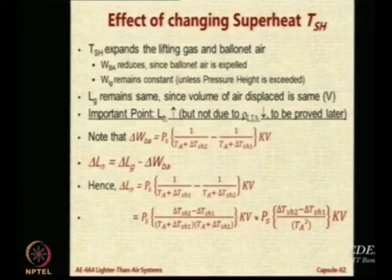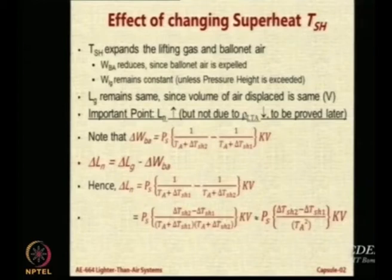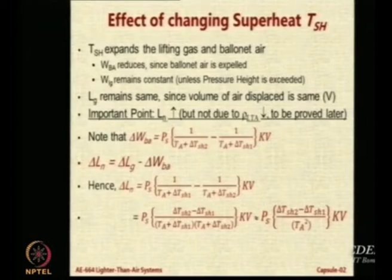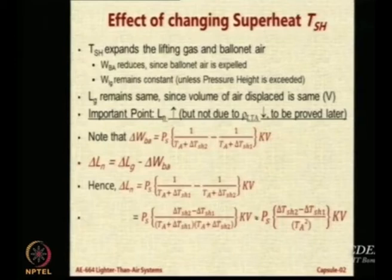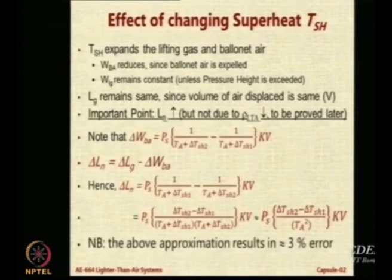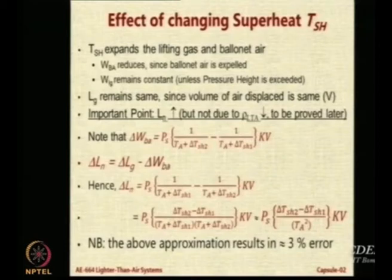If you look at the relative values of TA against delta TSH₁ and delta TSH₂, you can ignore the superheat terms in the denominator for an order-of-magnitude analysis. You can approximate the value as just the change in superheat divided by the square of the ambient air temperature. The difference between the middle and the right expression from this ignoring is not more than 3 percent. So without much loss of accuracy we can get an expression for net lift change.